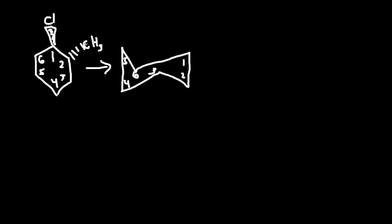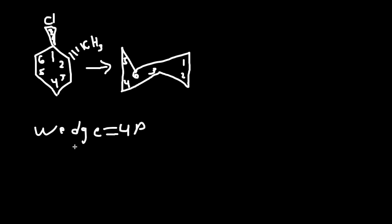How do you know where to put it? If we have a wedge, a wedge always means up, coming out. And if we have a dash, a dash always means down.